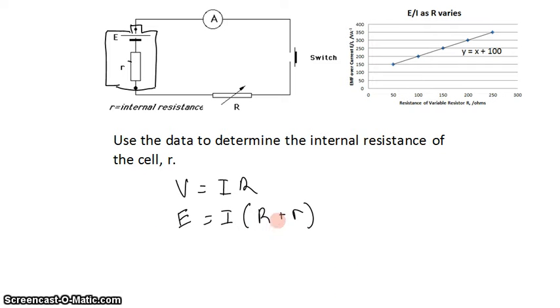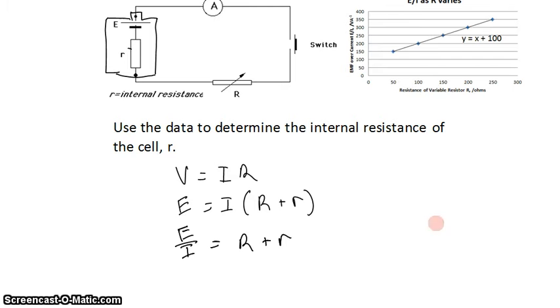Now what I want to do is I want to rearrange this so that it's linearized, so that it matches what I expect in this equation. I want E over I on the y-axis, and R on the x-axis. So I'll divide by I to get E on I. And now what I have is a linearized form. Y equals Mx plus C.